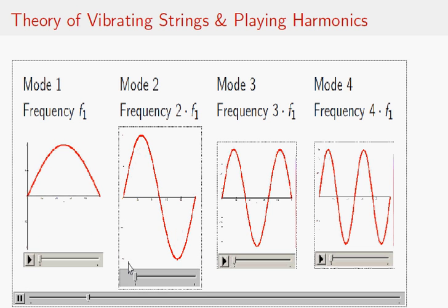Mode 2 is shown here. It vibrates twice as fast with frequency 2f1. This motion generates the second harmonic of the string's note.